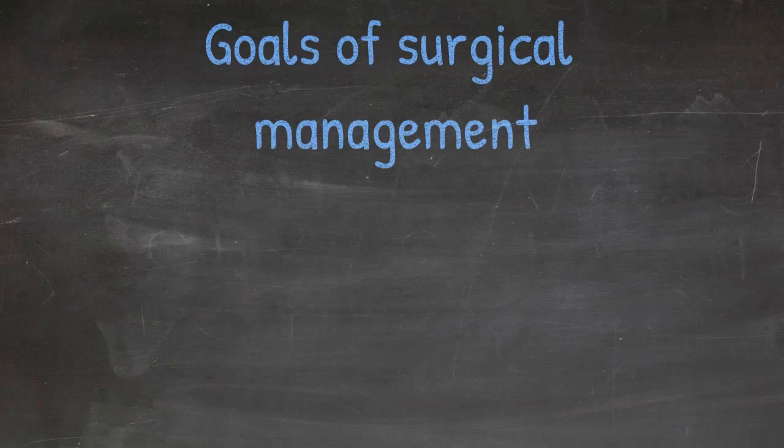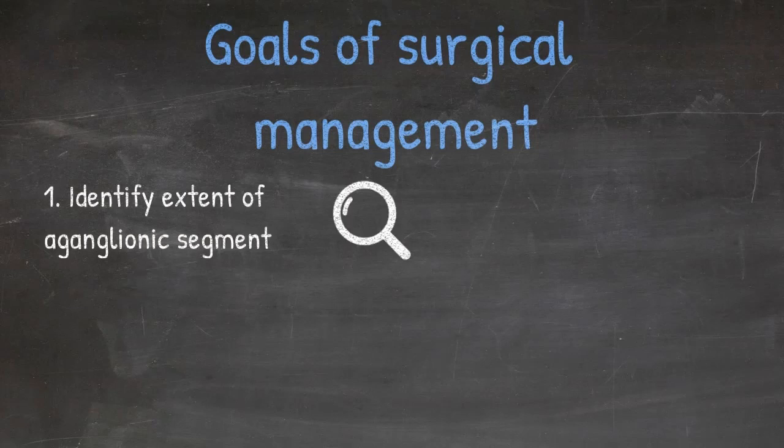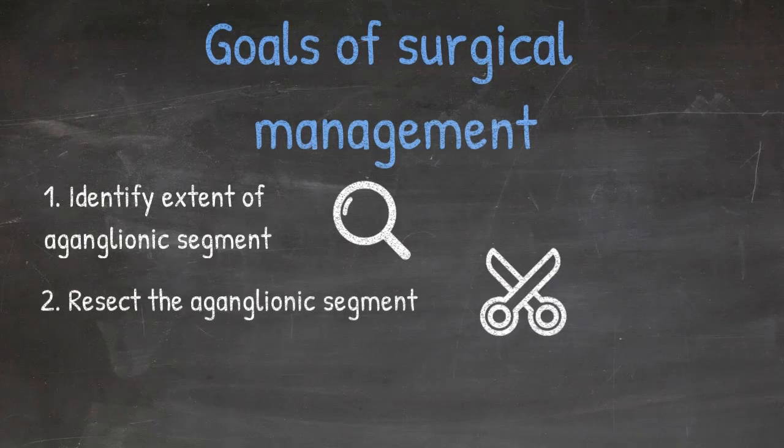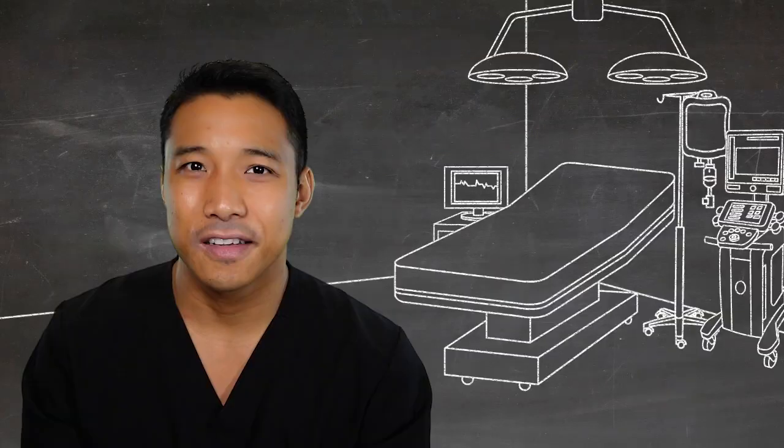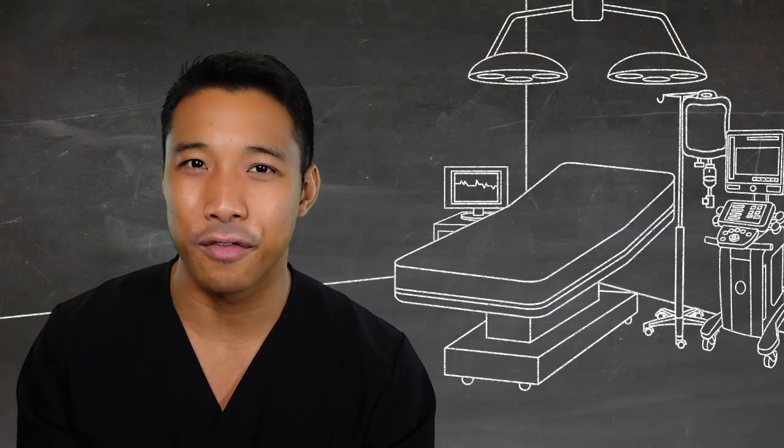All right, before we move on to surgical technique, let's just take a step back. What are the goals of surgical management? There are three goals to the surgical management of Hirschsprung disease. First, identify the extent of the aganglionic segment. Second, resect that segment. And third, restore the bowel to its continuity.